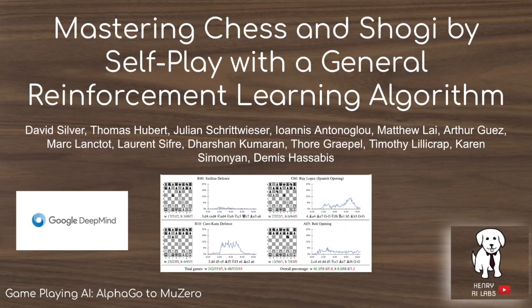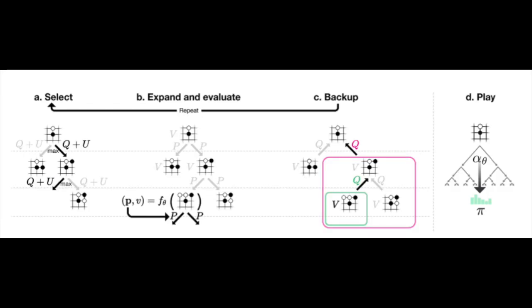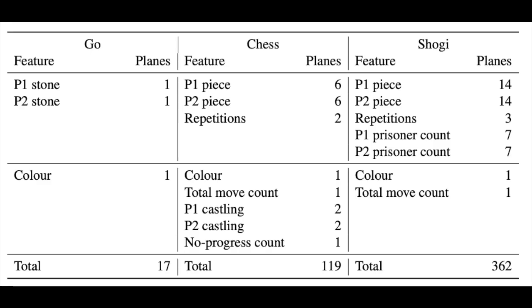Thanks for watching this explanation of the AlphaZero algorithm in the series going from AlphaGo to MuZero. AlphaZero doesn't make dramatic changes to the algorithm used in AlphaGoZero. Whereas AlphaGoZero builds heavily on AlphaGo by introducing a residual neural network, combining the value and policy networks into a single network, and using an extension to the self-play Monte Carlo tree search algorithm, AlphaZero extends this line of papers by generalizing the game from Go into chess and shogi.